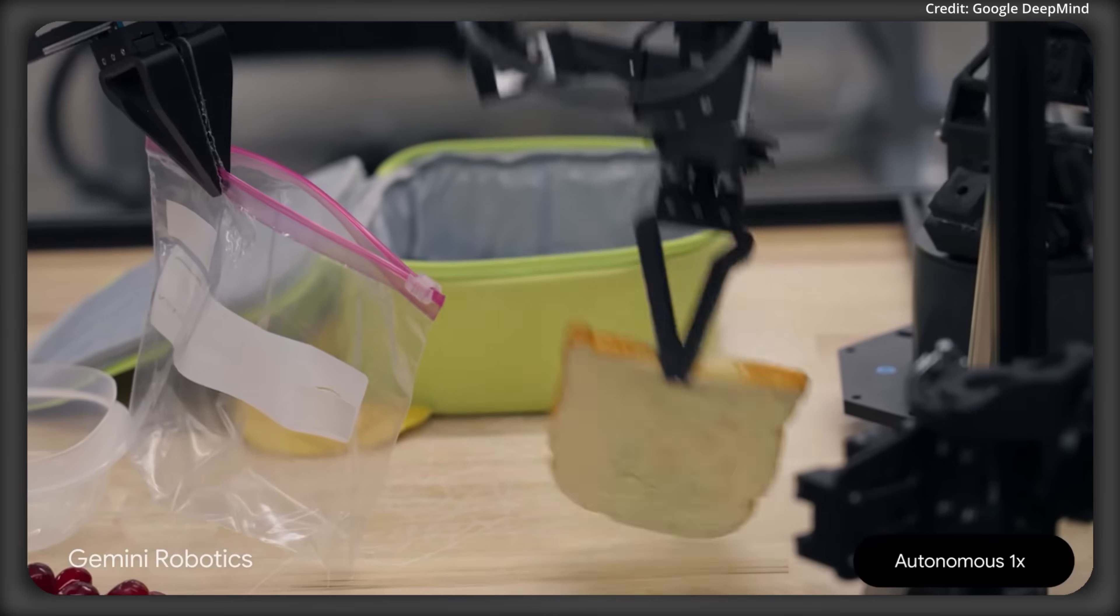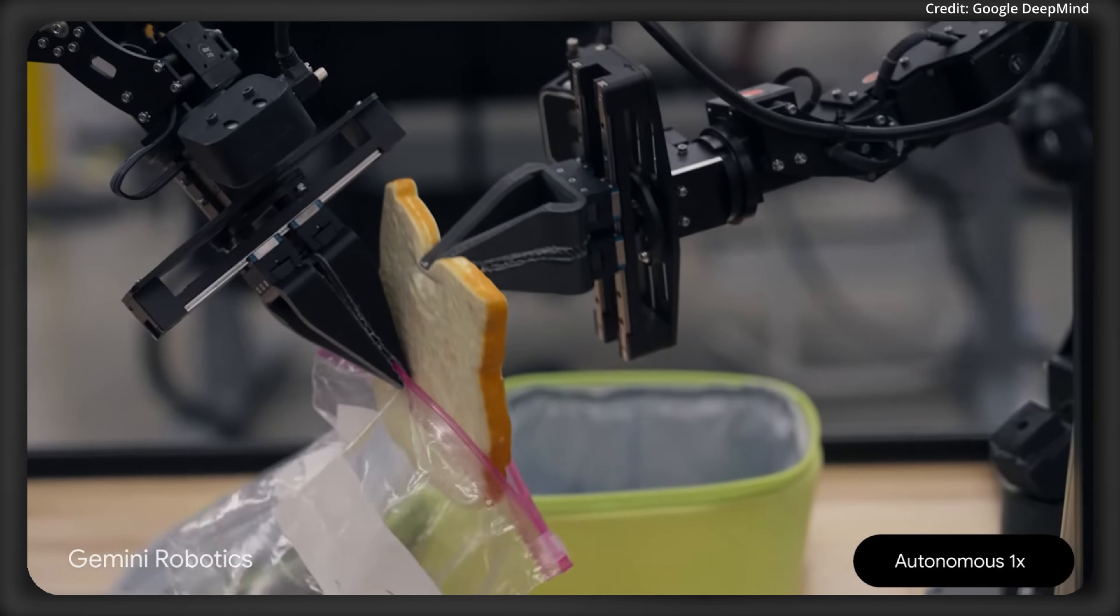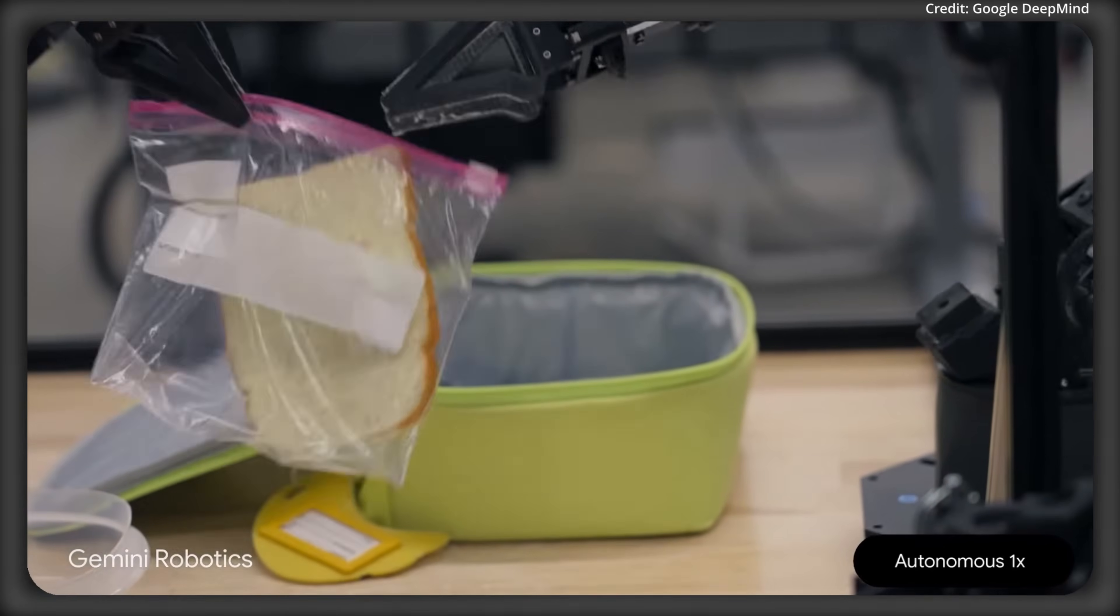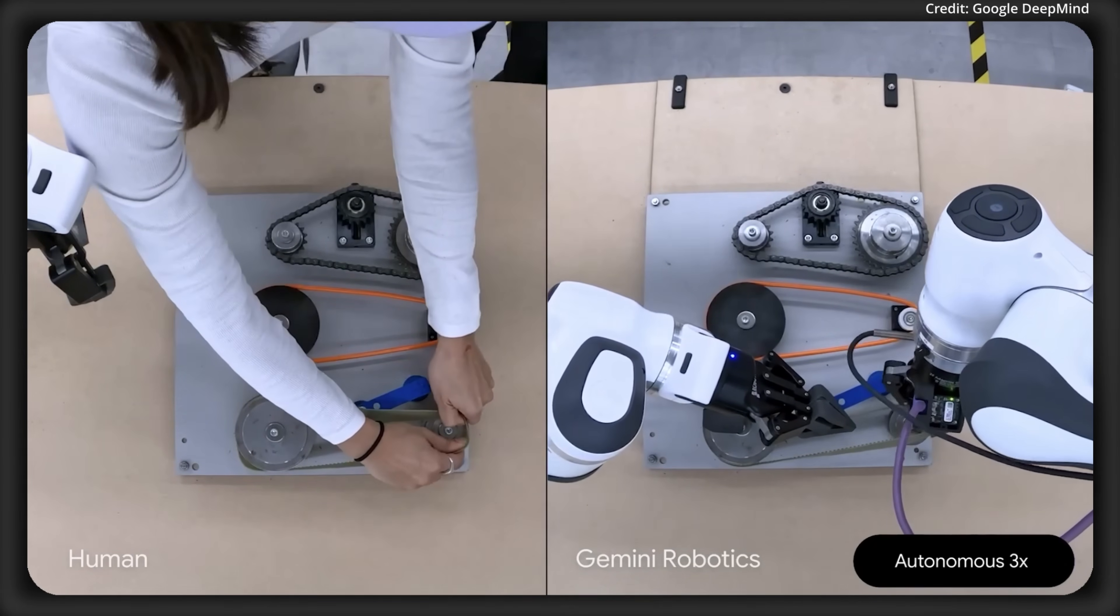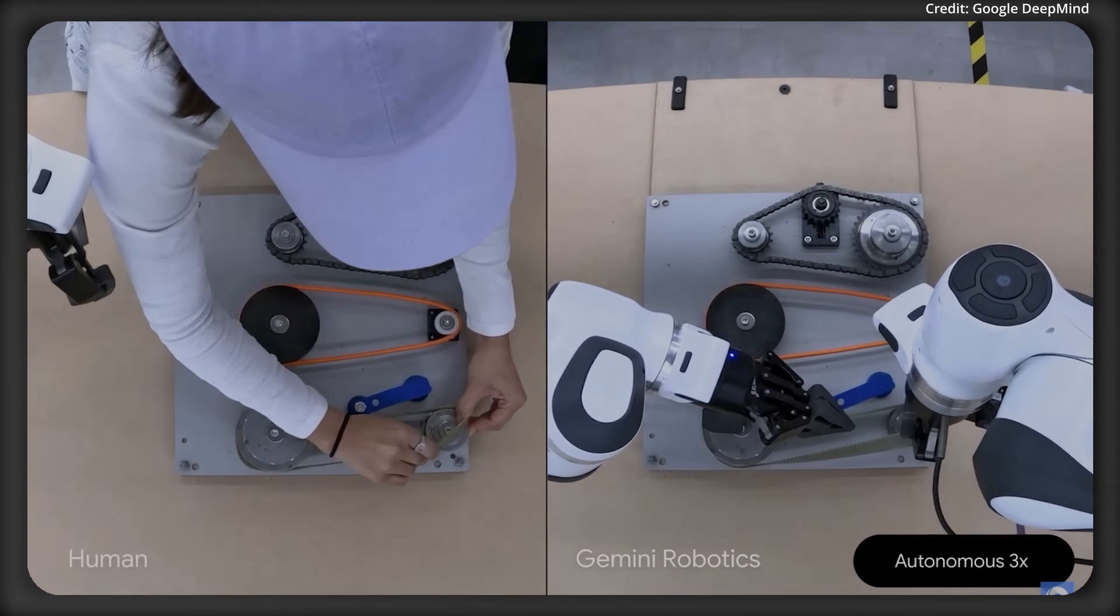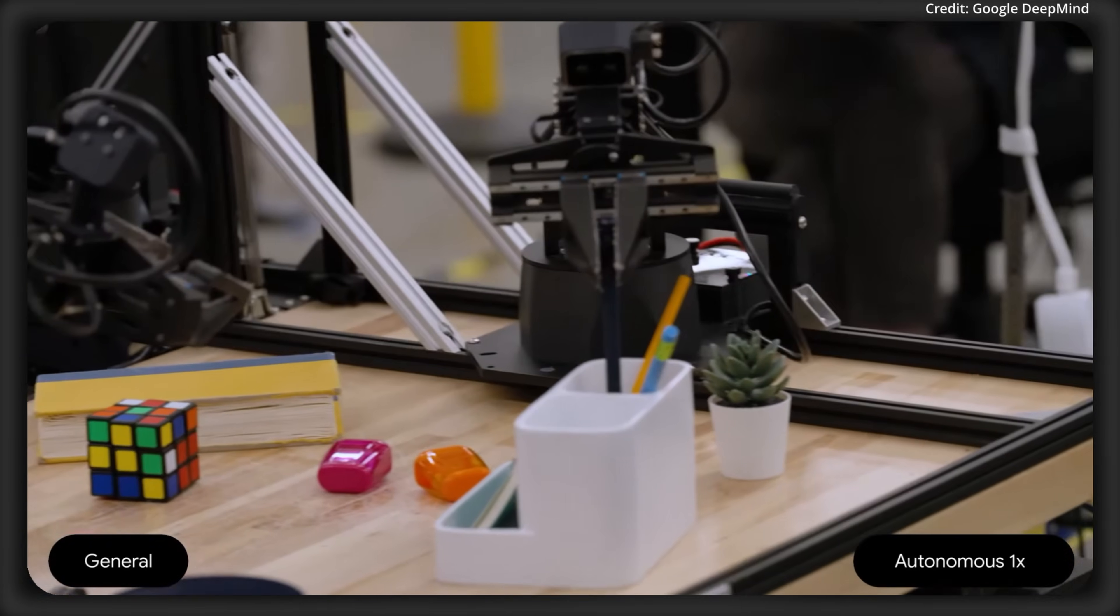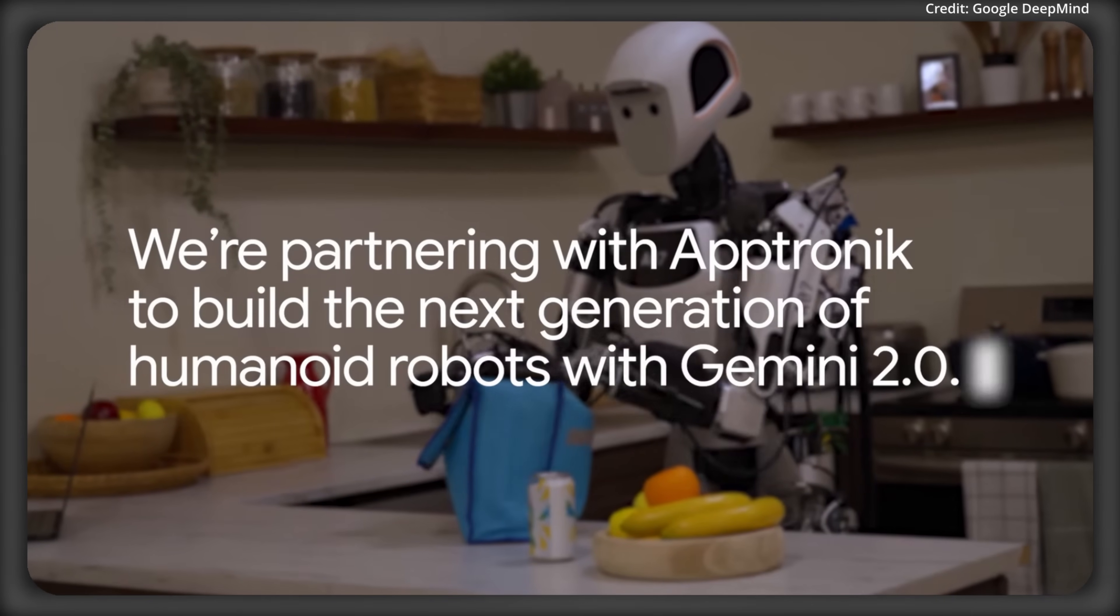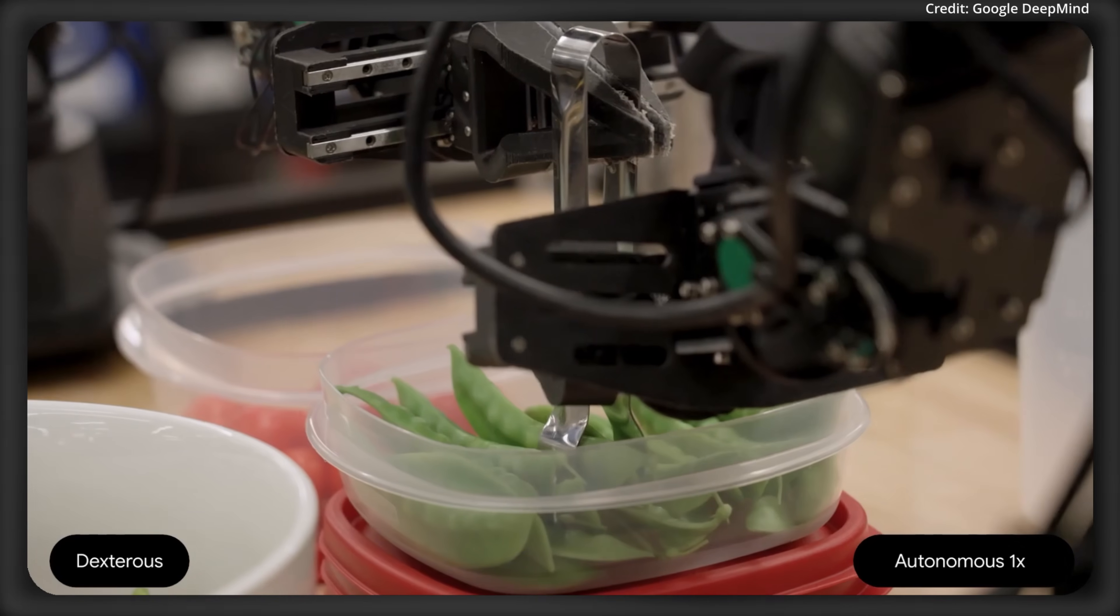For instance, origami folding or packing snacks in a ziploc bag. This is something that hasn't quite been done yet to this level, but Gemini Robotics allows it. And not only that, but it also allows it across multiple embodiments, which means that Gemini Robotics allows for different robots to carry out these different tasks, including bi-arm robotic platforms like Aloha 2 or different robot humanoids like Laptronic.